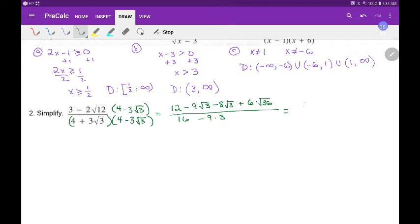Okay, so we will say 12, put these guys together and get negative 17 square root of 3, we know the square root of 36 is 6, so we're going to say plus, turns out to be 36 again over 16, take away 27.